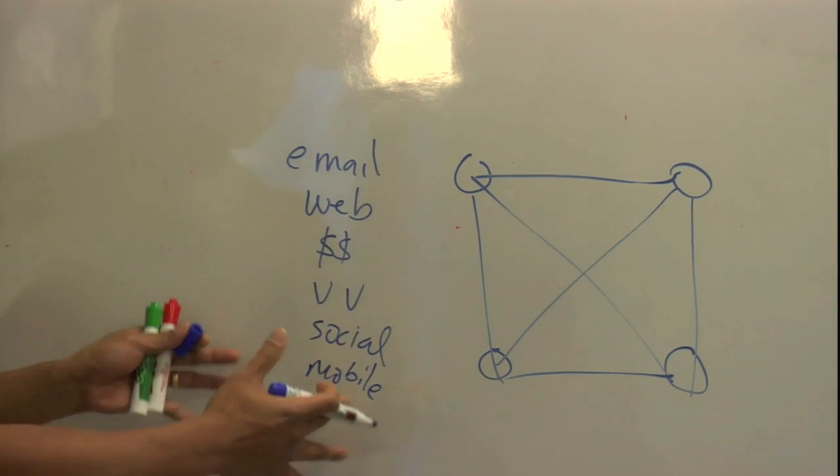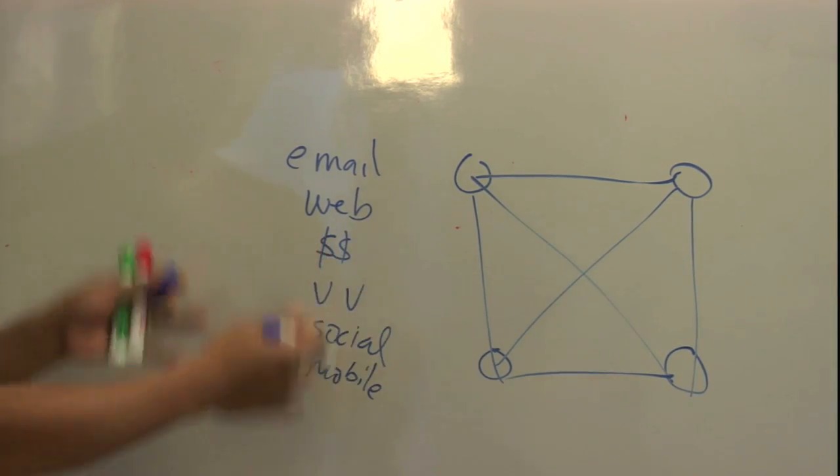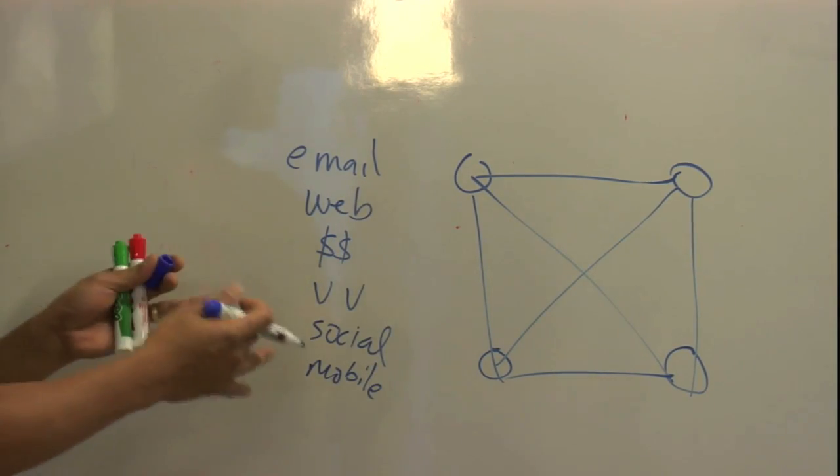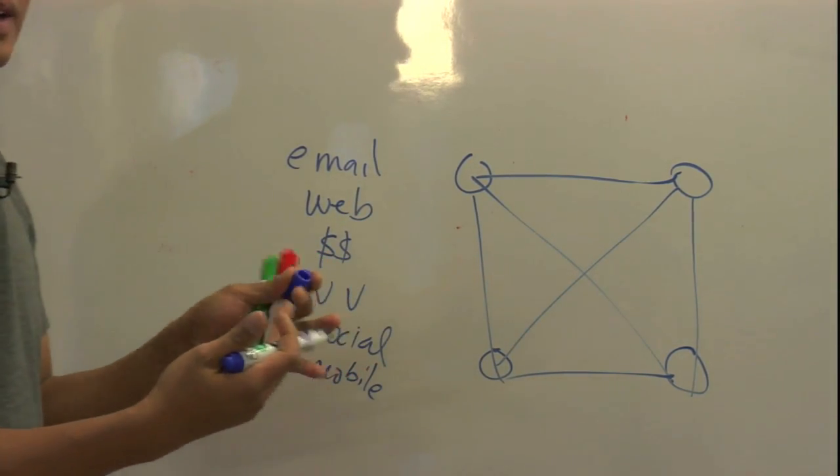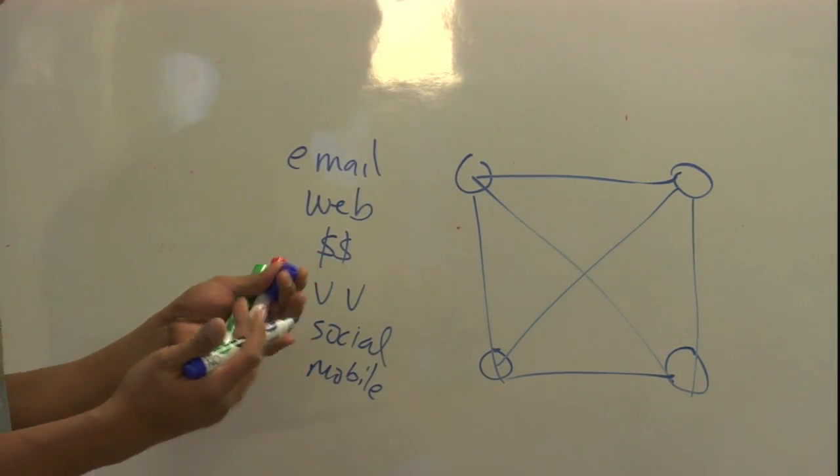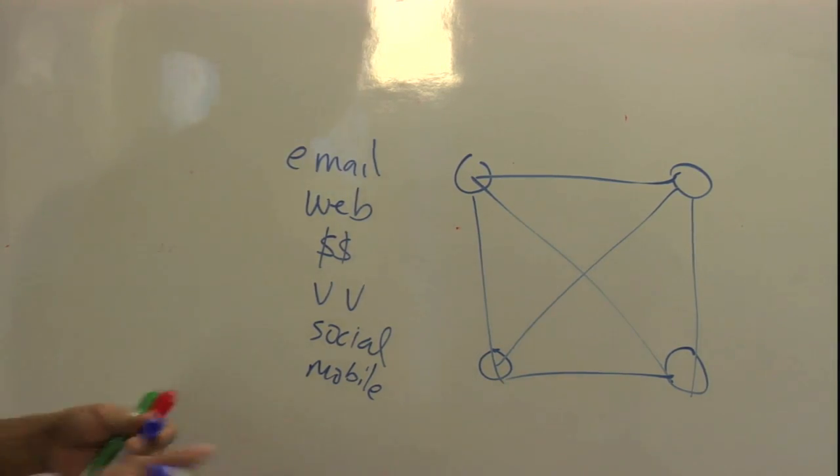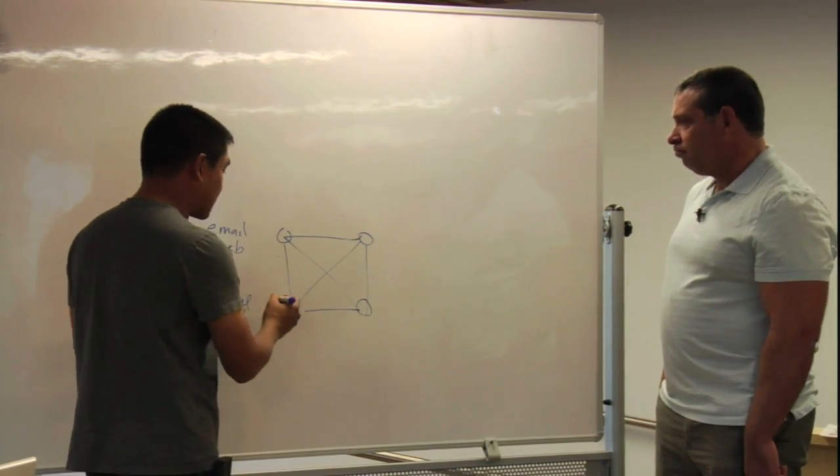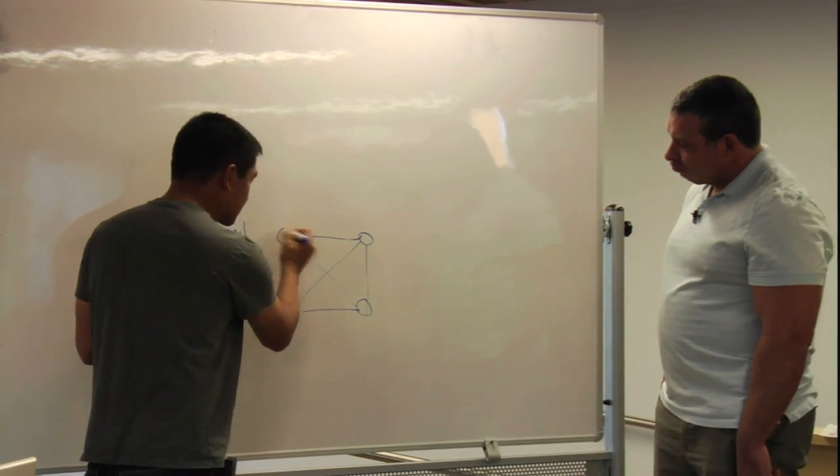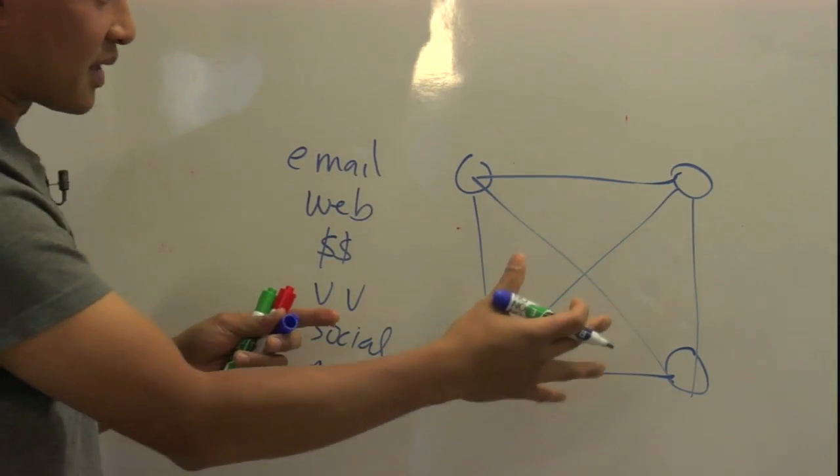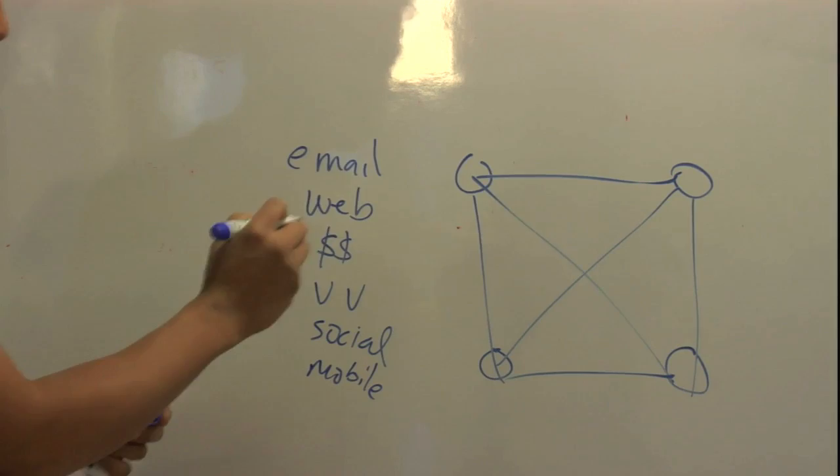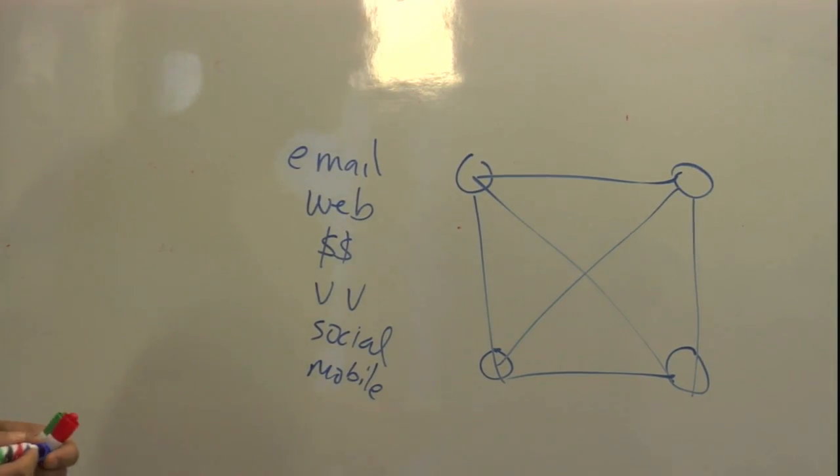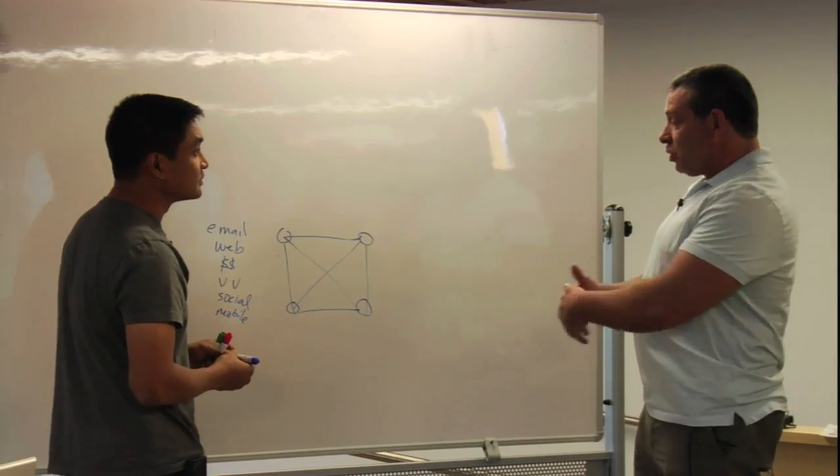So all these applications are trying to use the network. There's a lot of innovation going on over here, but the network is largely managed and configured in the same way as it has been for the last 20 years. There's some poor administrator seeing a new application coming on and needing to update this over here and this over here. And this network could be tens of thousands of networking devices that someone's trying to manually configure. So then the solution is?